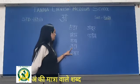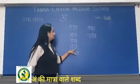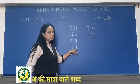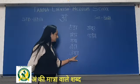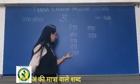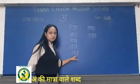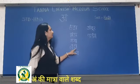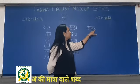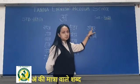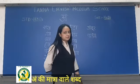Chaa ke oopar dot hai - chanda. 'Da' mein bhi aangh ki matra hai - chanda. Phir next letter words yahan pe hain - jungal, jungal, jungal. Aangh ke oopar dot - ambur, ambur. Neeche badi aangh ki matra hai.